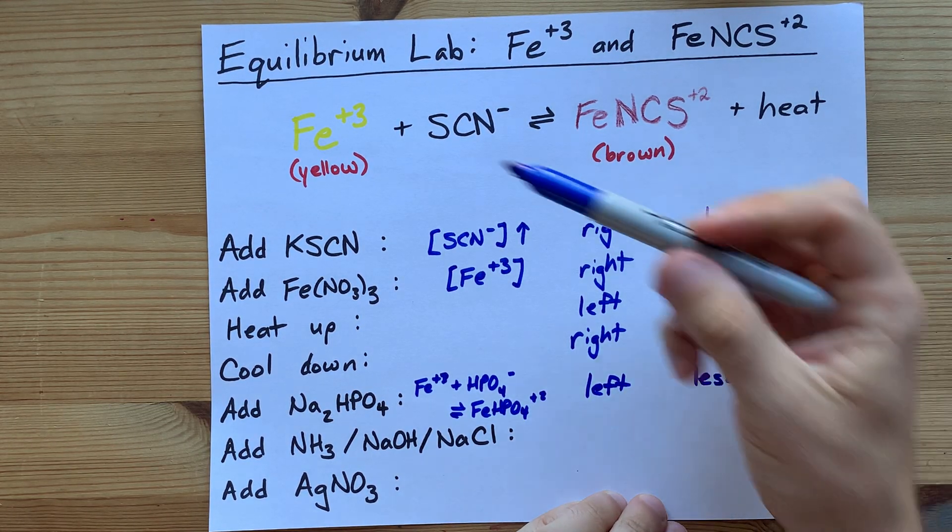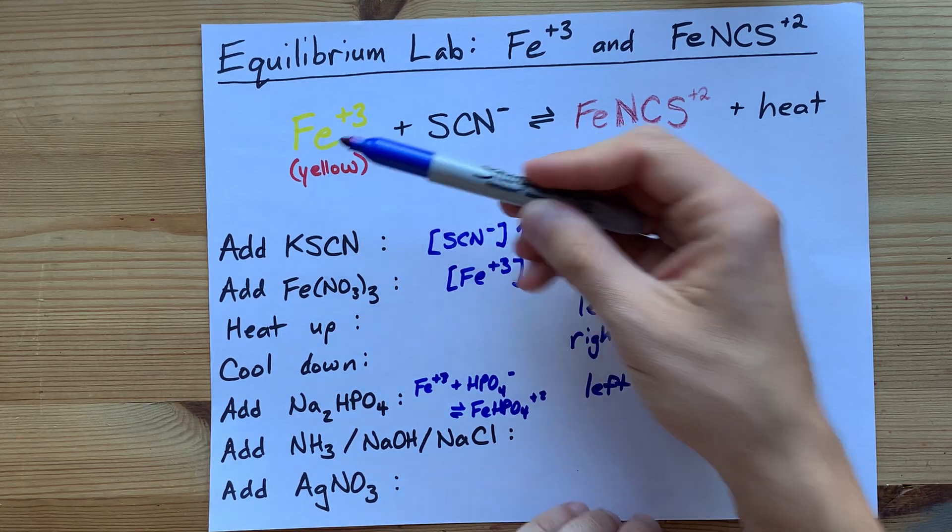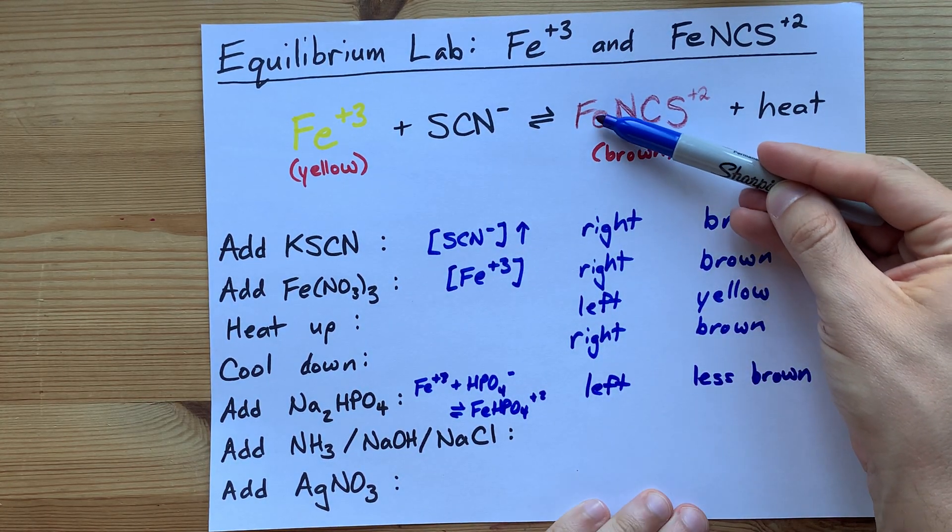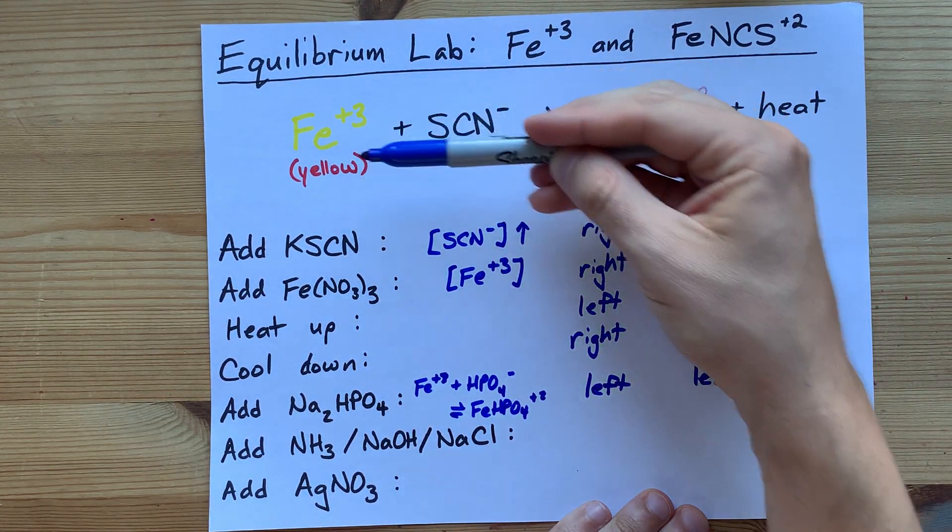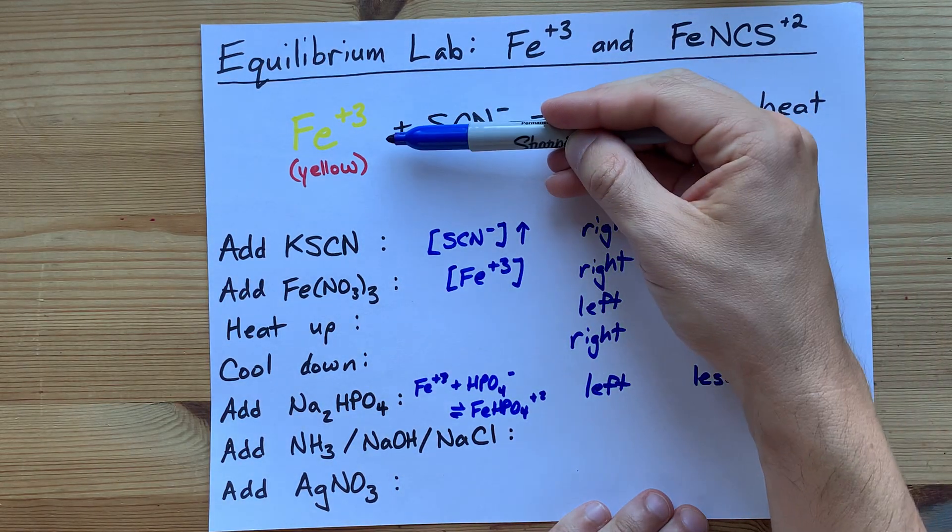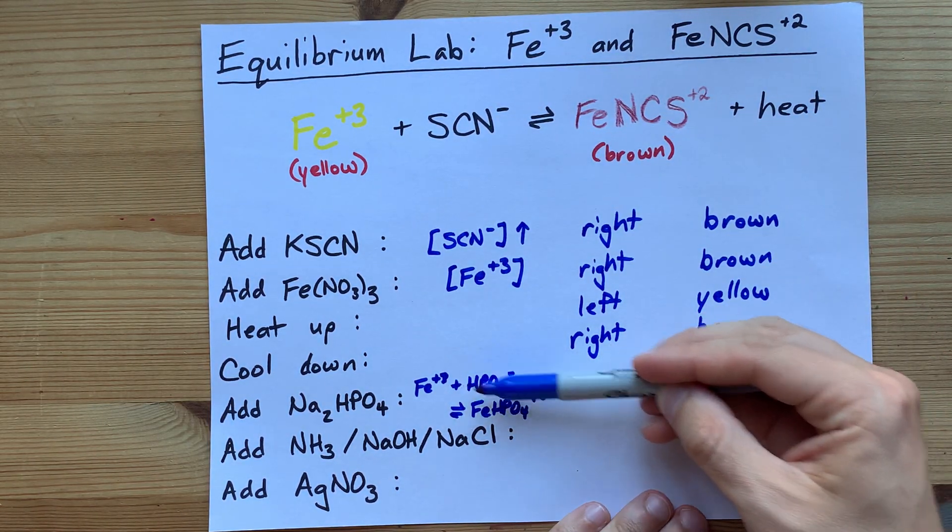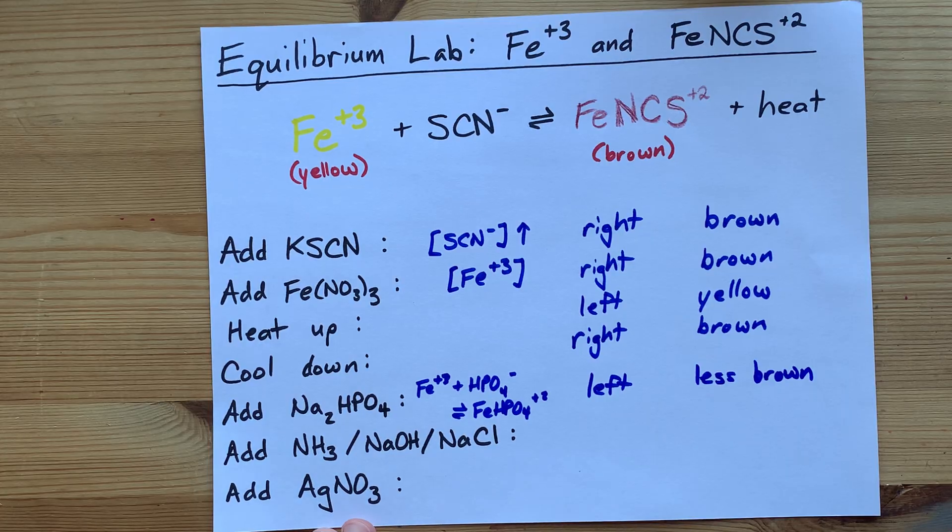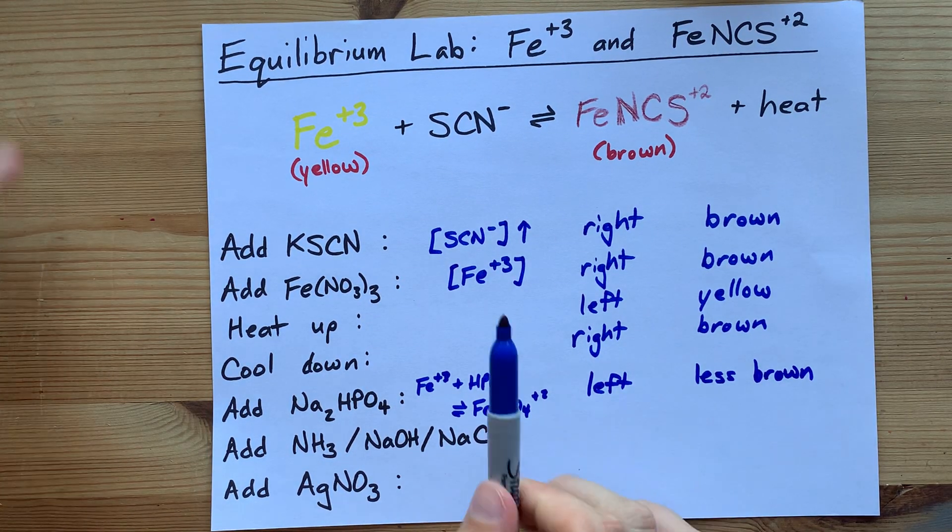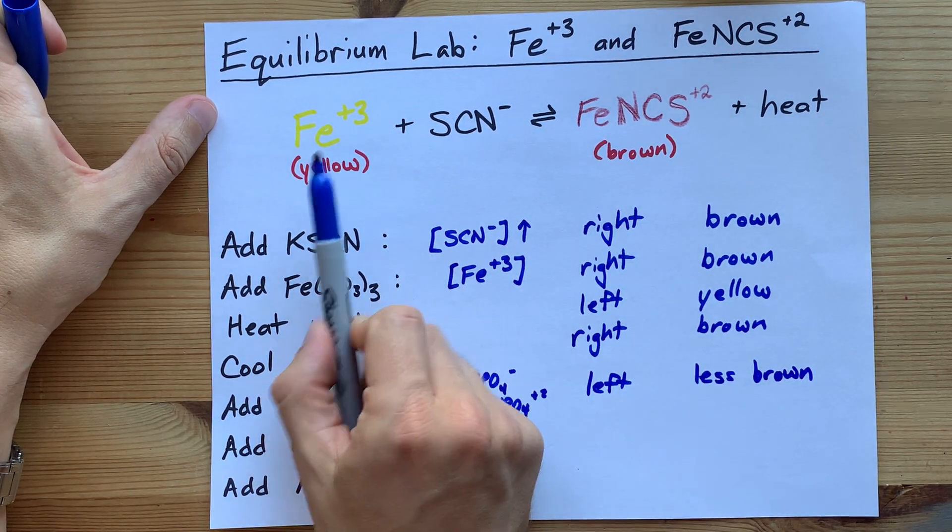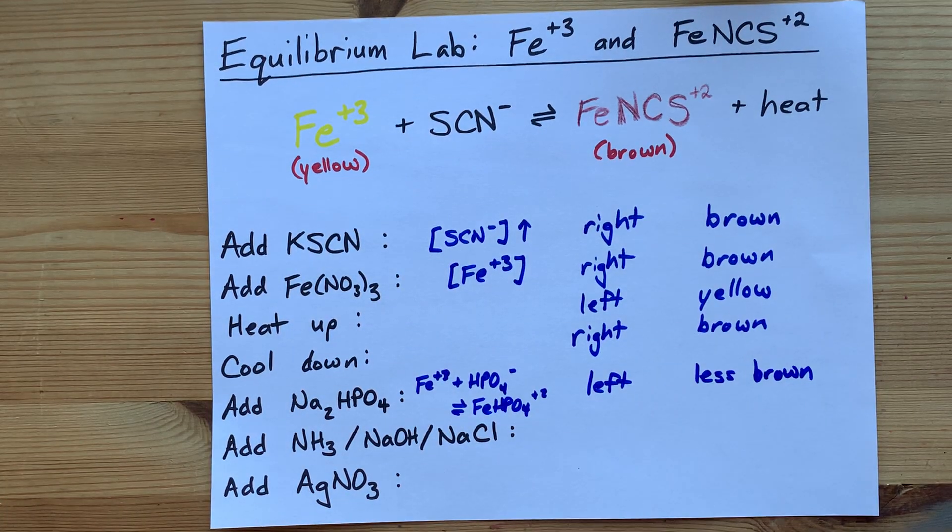I hesitate to say it's going to turn yellow, because any of the Fe plus 3 that you create by the shift left is being consumed by this reaction here. The more obvious thing is that it will turn less brown. You could probably get away with saying it will turn yellow.